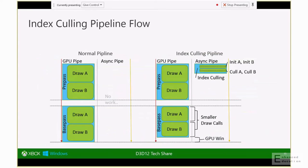By doing this index culling, the hope is that for many draw calls you eventually have a much smaller set of triangles to set up on the GPU side, which gives you a performance win.